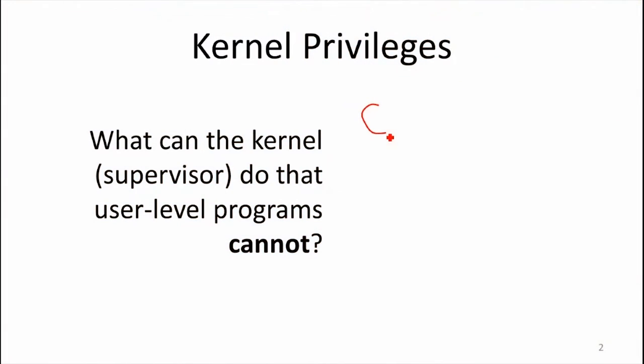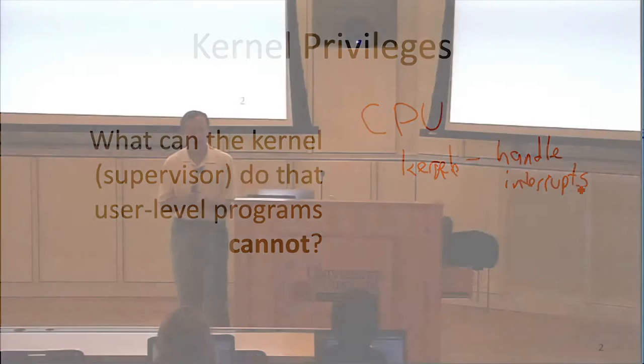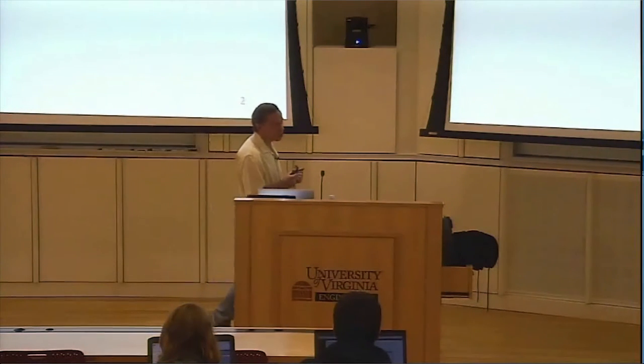What is so special about the kernel? What are the things that the kernel should be able to do that no other program should be able to do? The kernel is able to handle the kernel timer interrupt — it can run even if other programs are running. We're trying to share the CPU, and the kernel has special access to it. If a regular program could handle the kernel timer interrupt instead of the kernel, that program could decide to keep running and the kernel would never get a chance. Certainly only the kernel should be able to do that.